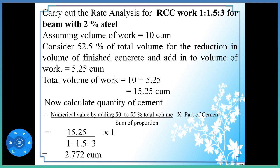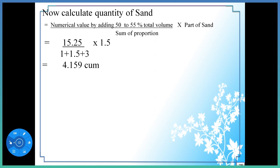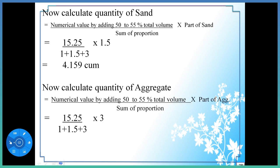This is the quantity of cement required to complete the RCC work for beam having proportion 1:1.5:3. Similarly, we calculate the quantity of sand: total volume divided by sum of proportion into part of sand, which is equal to 4.159 cubic meter. After that, calculate the quantity of aggregate: 8.318 cubic meter.